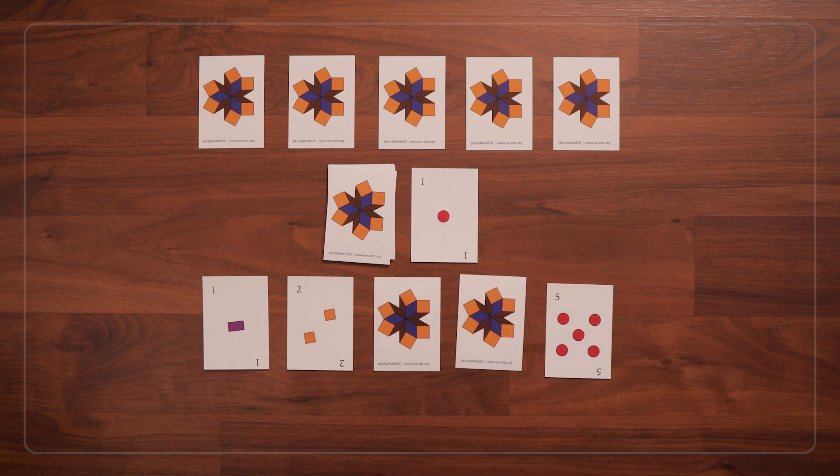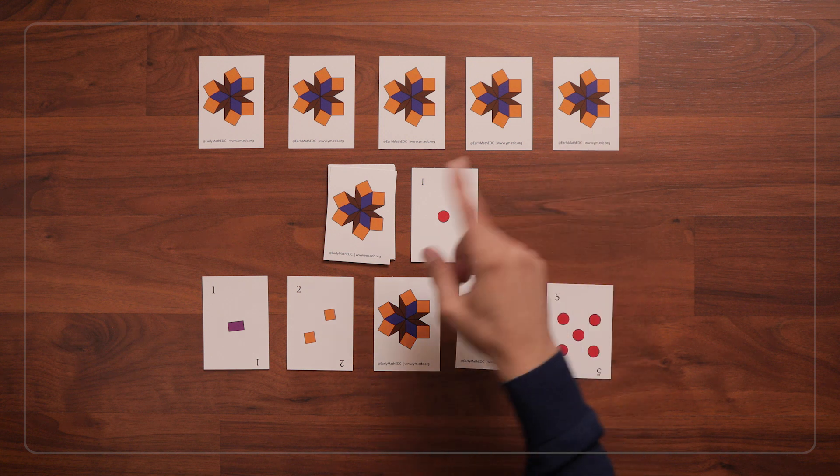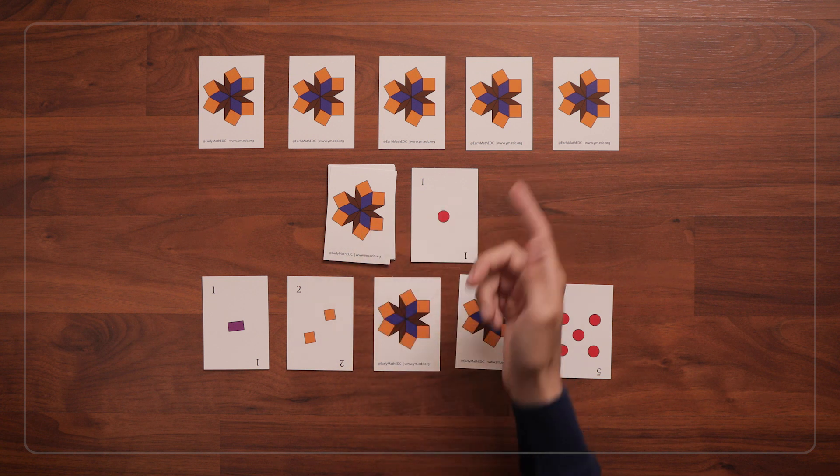The next player can choose to either take this face-up 1 card and use it in their line, or to draw a face-down card from the top of the pile.